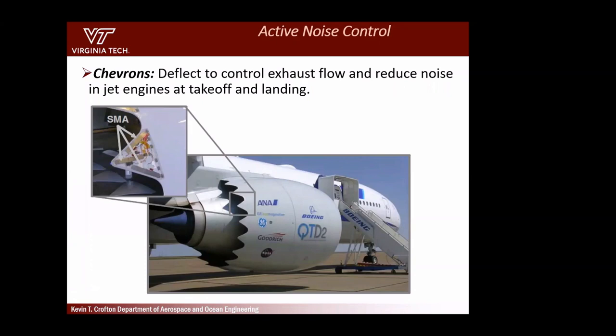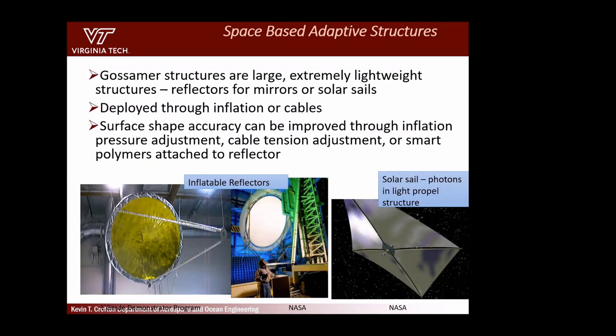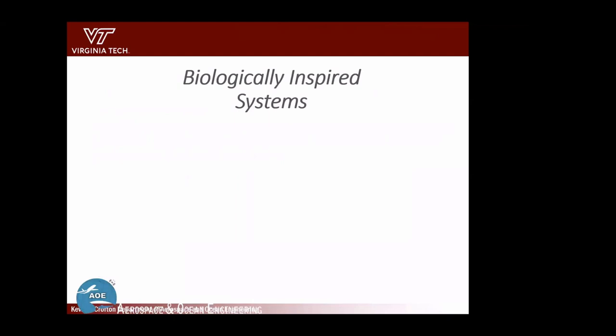Boeing has put smart materials on the chevrons of a jet engine for controlling noise — when landing or taking off you want quiet operation, and when you're up flying with no people around you can allow it to be loud again, using SMA wires. Even in space, my PhD work was on development of shape and vibration control of a large space mirror. In space as you rotate, you have gravitational and thermal effects to compensate for, and you can do that using smart materials.